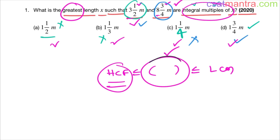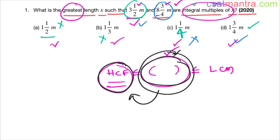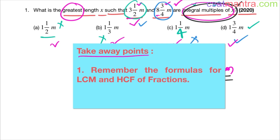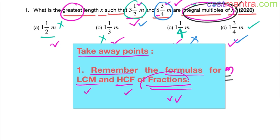The key takeaway: integral multiples of x means x is a factor, so factors are less than or equal to the given numbers, while the numbers are less than or equal to their multiples. Most importantly, please remember the formulas for LCM and HCF of fractions. For fractions, the formulas are different from those for whole numbers, so you need to remember them clearly.